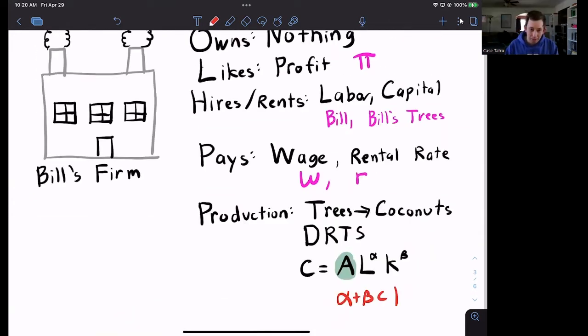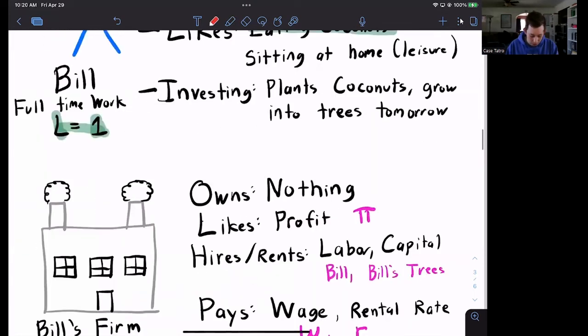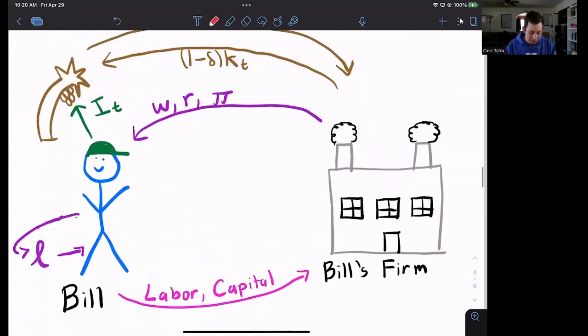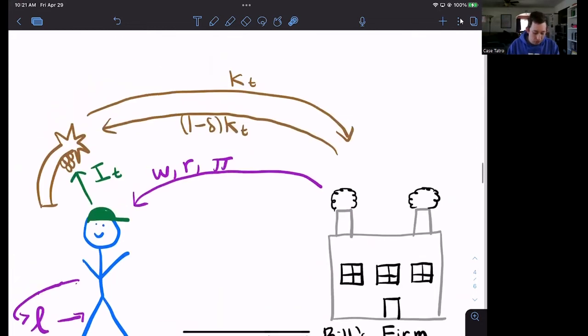Sometimes I like to have a more graphical depiction of what's going on rather than just a bunch of words. So here's my nice graphical picture. Let's start over here with Bill. Bill likes leisure. That's something Bill can give himself. Bill has labor and capital that he rents to Bill's firm. Bill's firm then turns around and pays for those inputs, pays wage and the rental rate. It also is going to give Bill the profit. That's akin to if you own your own coffee shop. At the end of the day, whatever you have left over in the cash register, you take home with you because you own that business.